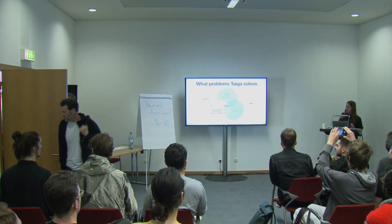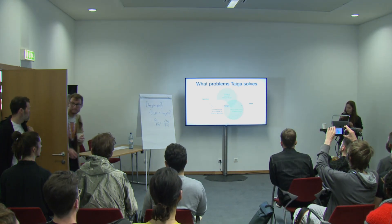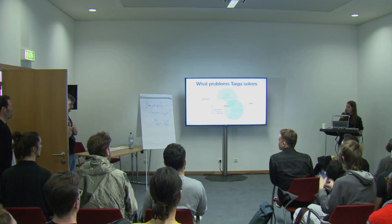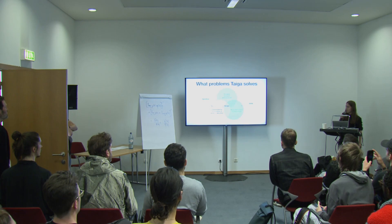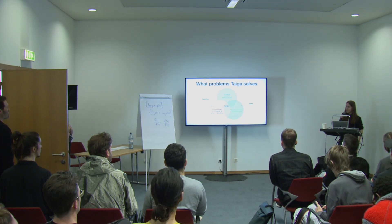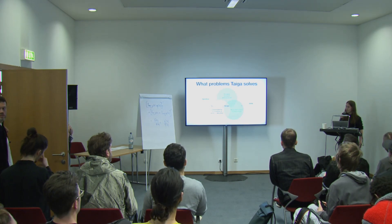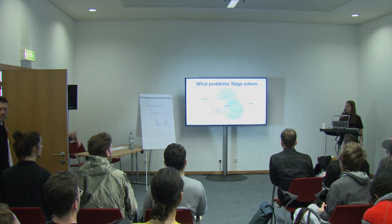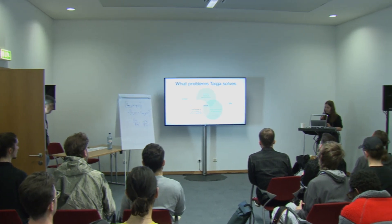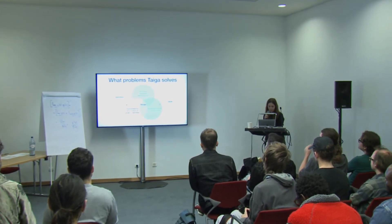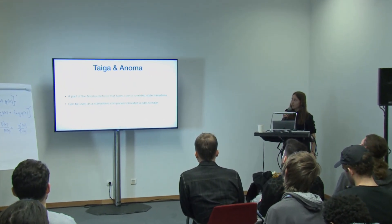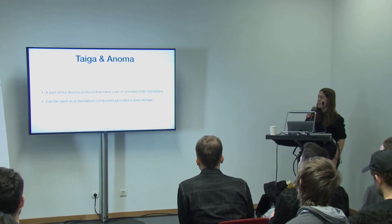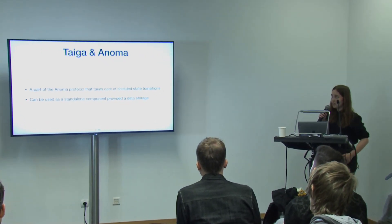Tyga is kind of at the intersection of these projects. But also on top of that, Tyga provides private account abstraction. Private account abstraction basically means that users can choose how to authorize their transactions — like a signature or whatever they want. They can specify it. For people who are familiar with Anoma, Tyga is the privacy-preserving part of Anoma that takes care of shielded state transitions.